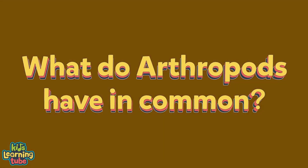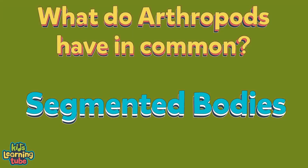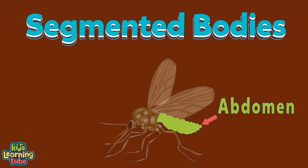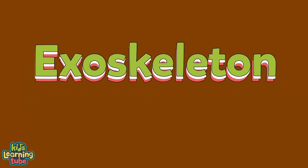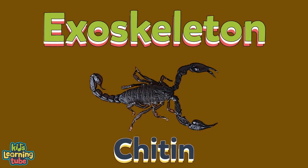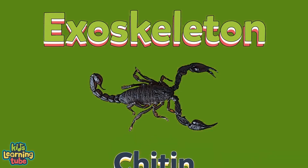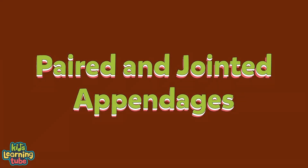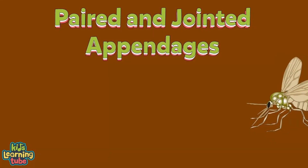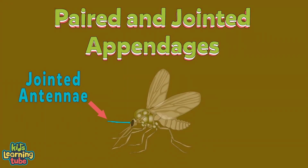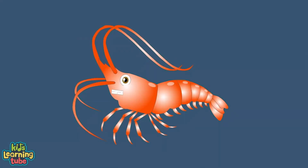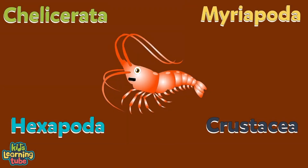Arthropods have segmented bodies which include three things: a head, a thorax, and an abdomen. They have an exoskeleton — a hard outer shell made of chitin, a fibrous substance consisting of polysaccharides. When arthropods get bigger, they have to shed their exoskeleton. Arthropods also have paired and jointed appendages including jointed feet, claws, jointed antennae, and external mouthparts.